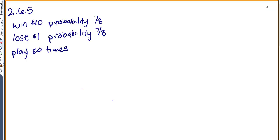This is problem 2.6.5. It tells us we can play a game where we can win $10 with a probability of 1/8, or lose $1 with a probability of 7/8. We're going to play 50 times and find the expected value and standard deviation. But before we figure out what happens if we play 50 times, we need to figure out what will happen if we just play once.